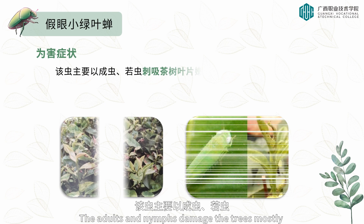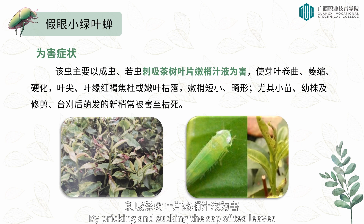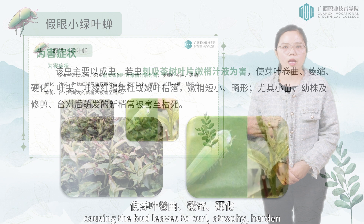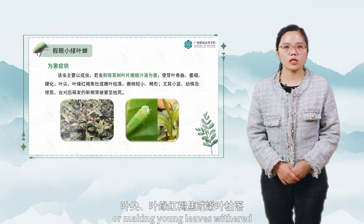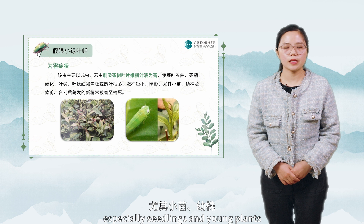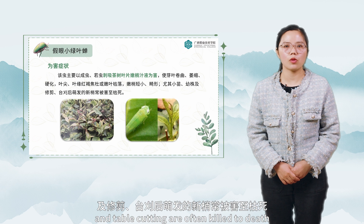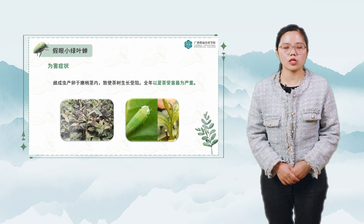The adults and nymphs damage tea trees by pricking and sucking the sap of tea leaves, causing bud leaves to curl, atrophy, and harden, with leaf tips and edges turning red-brown. Young leaves wither, tender shoots become short and deformed. Seedlings, young plants, and new shoots after pruning are often killed. Female adults also lay eggs in shoot stems, hindering the growth of tea trees. Summer tea is damaged most severely throughout the year.